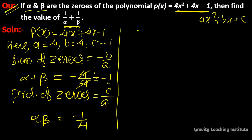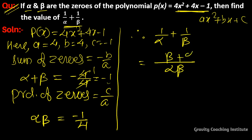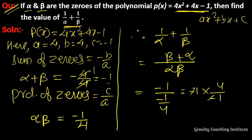Therefore, 1/alpha + 1/beta = (beta + alpha) / (alpha × beta). The value of alpha + beta is -1 and alpha × beta is -1/4. So the result is -1 divided by (-1/4) = -1 × (4/-1) = 4. The answer is 4.